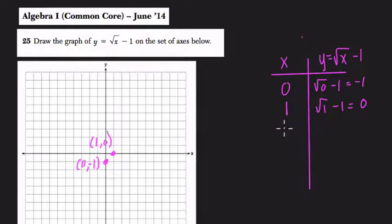As soon as you plug in 2, you realize, oh, wait a minute, we have the square root of 2 minus 1, and the square root of 2 is irrational. In fact, the next point we can plot, the square root of 3 minus 1 irrational, is when the input's 4. The square root of 4 minus 1 is 2 minus 1, which is 1.